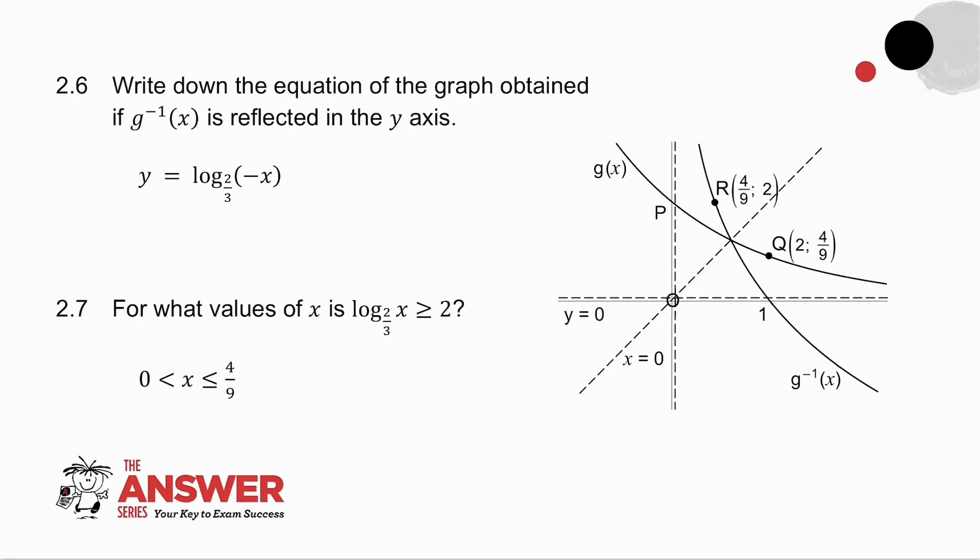The last question, where is log to the base 2 thirds of x greater than or equal to 2? Well, it's equal to 2 at that point. Where is it greater than or equal to 2? Over there. In other words, when x is less than or equal to 4 over 9. But, there's my asymptote. My graph never goes beyond my asymptote. Which means I must include that x must be greater than 0 as well.